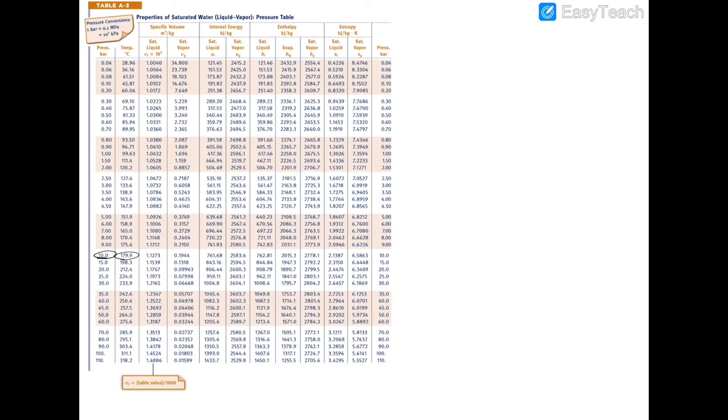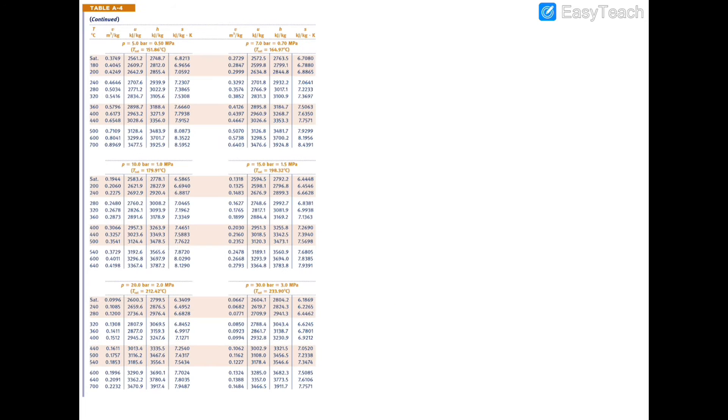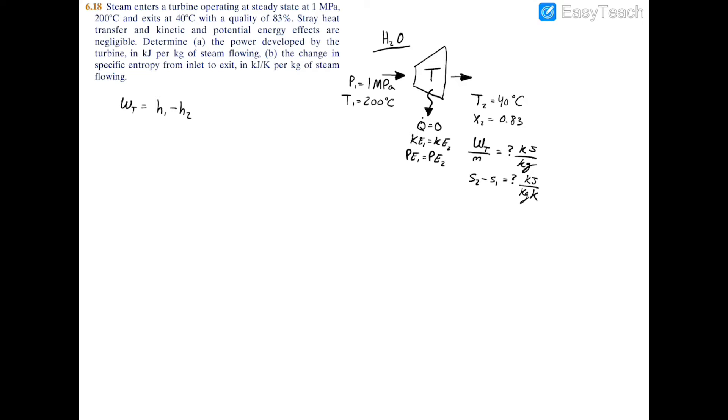If we go to the superheated tables table A4 and we go to 10 bar and 200 celsius, we can use this specific enthalpy of 2827.9 kilojoules per kilogram. So we have h1 equals 2827.9 kilojoules per kilogram. Now we have to subtract h2.